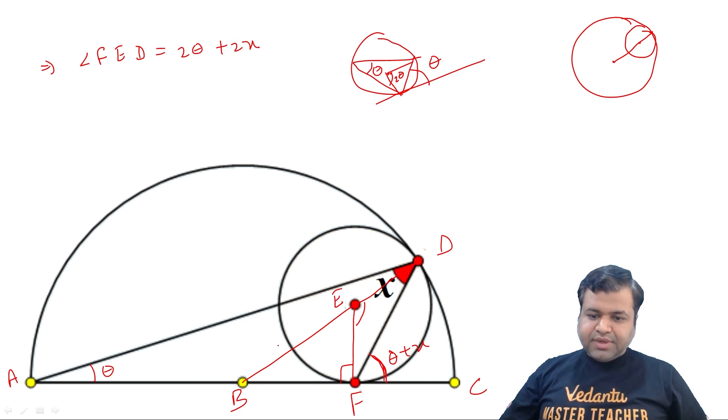Can I say BA and BD, they are radius. So this angle will be theta because BAD will be an isosceles triangle. Clearly this is exterior angle in BAD triangle. So this should be theta plus theta, which will be 2 theta.